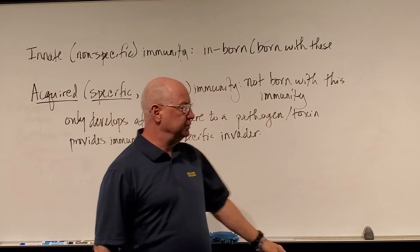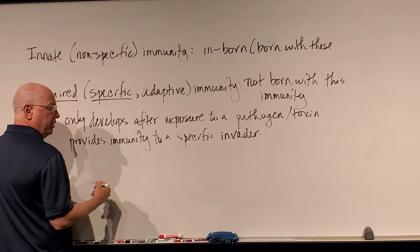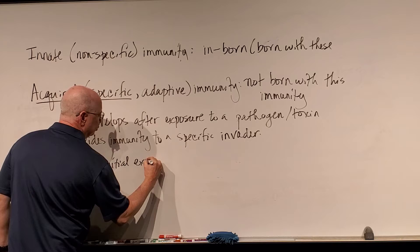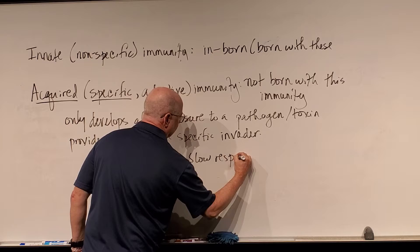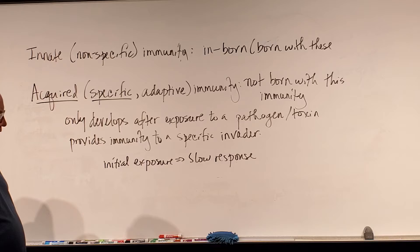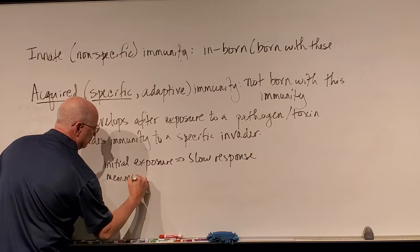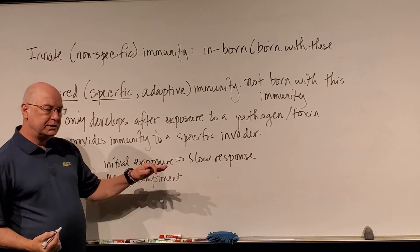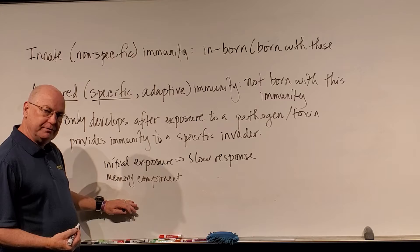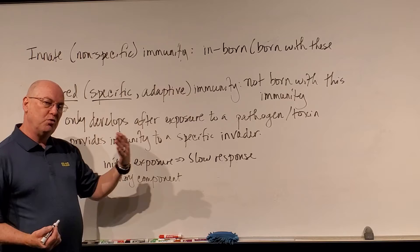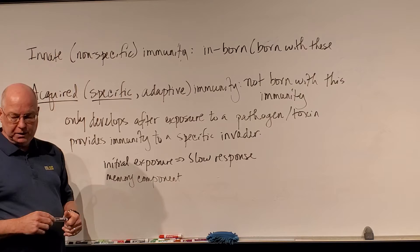A couple of things about acquired immunity: it's not inborn — we only acquire it after exposure. On initial exposure, you get a slow response; it could take much longer than the innate immune system. However, it has a memory component. Once a particular lymphocyte recognizes a specific invader, it will remember that invader. Under subsequent exposures, you get a much more rapid response. But the initial exposure gives you a slower response.